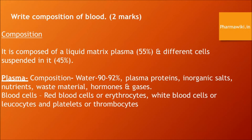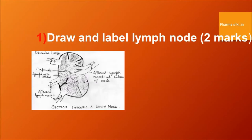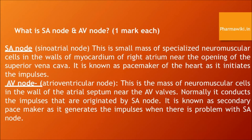What is the SA node and AV node? The SA node is the sinoatrial node, a small mass of specialized neuromuscular cells in the walls of the myocardium of the right atrium near the opening of the superior vena cava. It is known as the pacemaker of the heart as it initiates impulses. The AV node, or atrioventricular node, is the mass of neuromuscular cells in the wall of the atrial septum near the AV valves. It normally conducts impulses originated by the SA node and is known as the secondary pacemaker, generating impulses when there is a problem with the SA node.